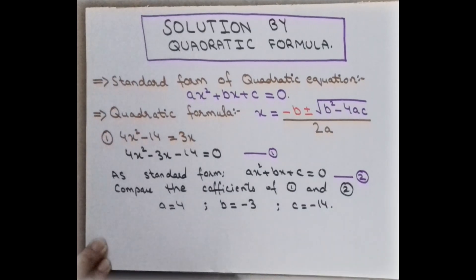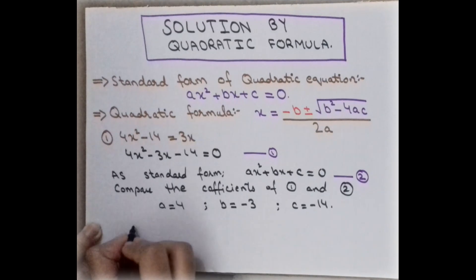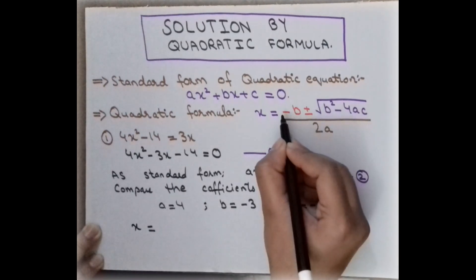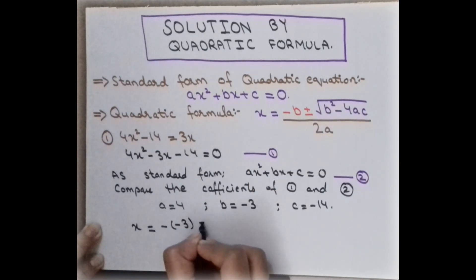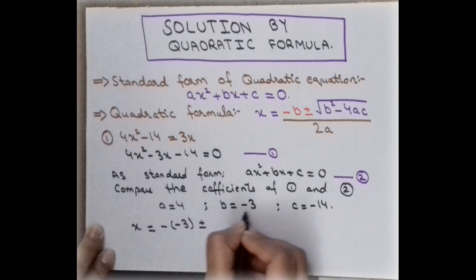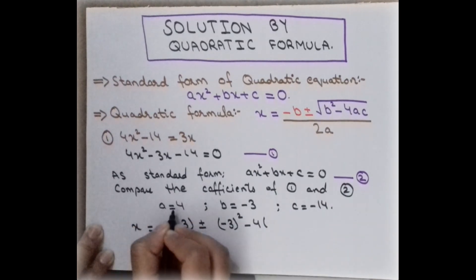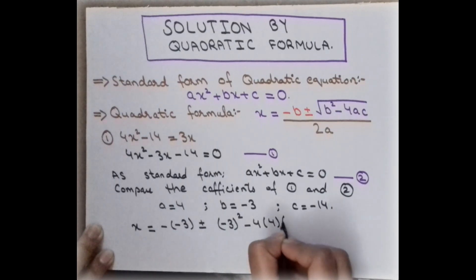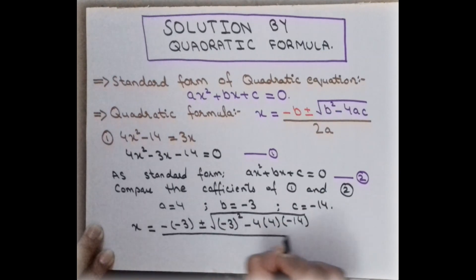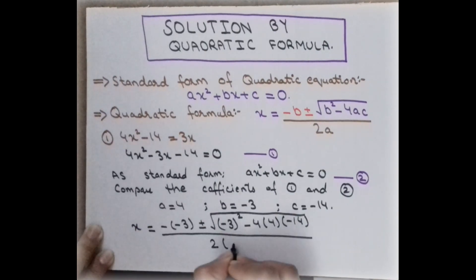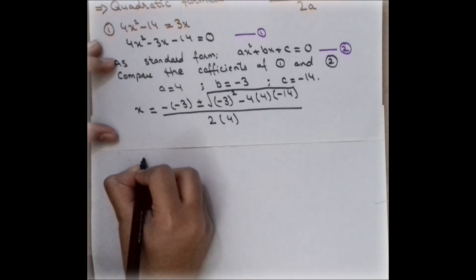By comparison, b = -3 and c = -14. Now we put these values into the quadratic formula. We write x = (-b ± √(b² - 4ac)) / 2a. So substituting: x = (-(-3) ± √((-3)² - 4(4)(-14))) / (2 × 4).